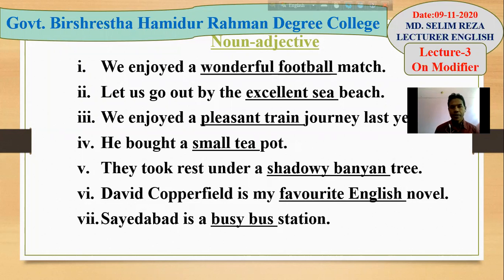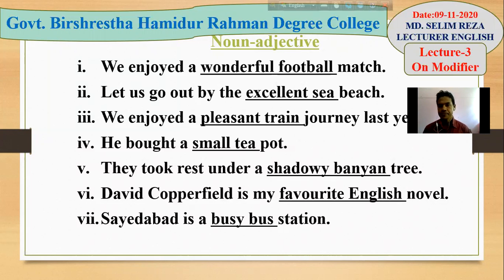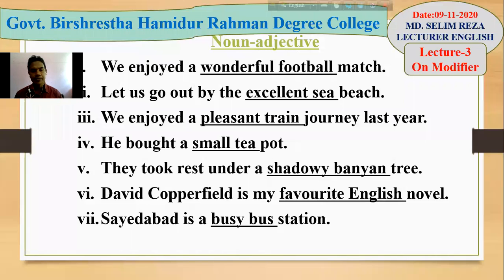Second example: 'Let us go out by the excellent series.' Here we also find 'excellent' an adjective and 'series' a noun — together they give extra information, so they are called noun adjective used as premodifier. Third example: 'We enjoyed a pleasant train journey last year.' Here 'pleasant train' is a noun adjective used as premodifier.